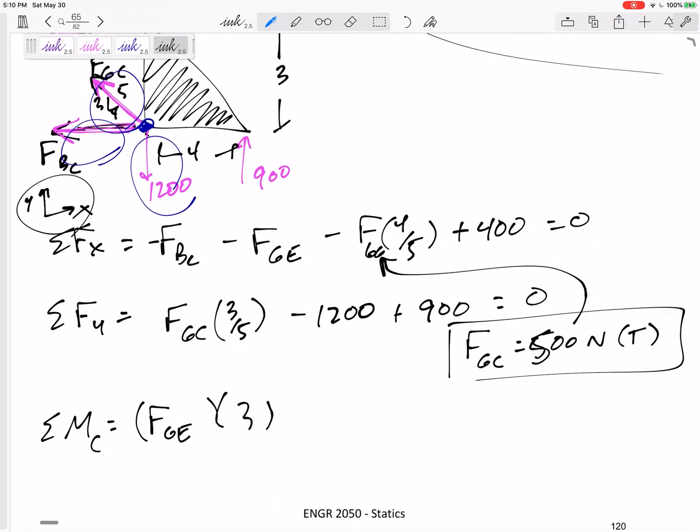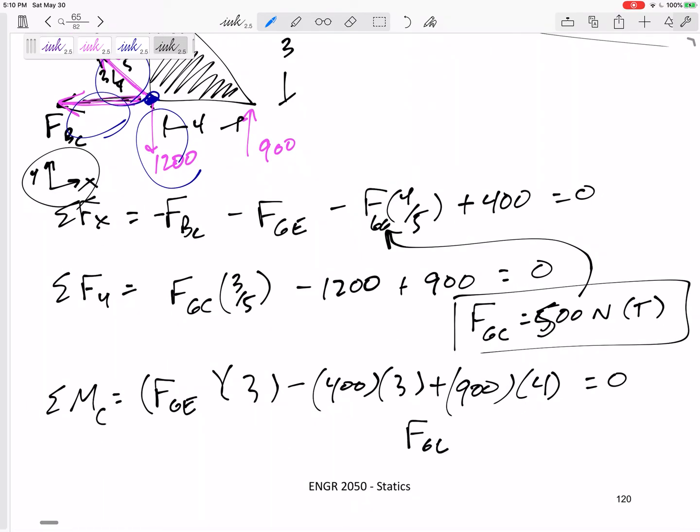F_GE is acting three away, creating a positive moment. But that 400 is acting three away, creating a negative moment. And then this 900 is acting four away, creating a positive. Set that equal to zero, and I would get F_GE is negative 800. What's that negative mean? It means it shows incorrectly. It was actually 800 newtons compression. Box that in. You need units, and you need to tell me compression or tension. Box that in, and then I'm ready to go back and plug this back in.